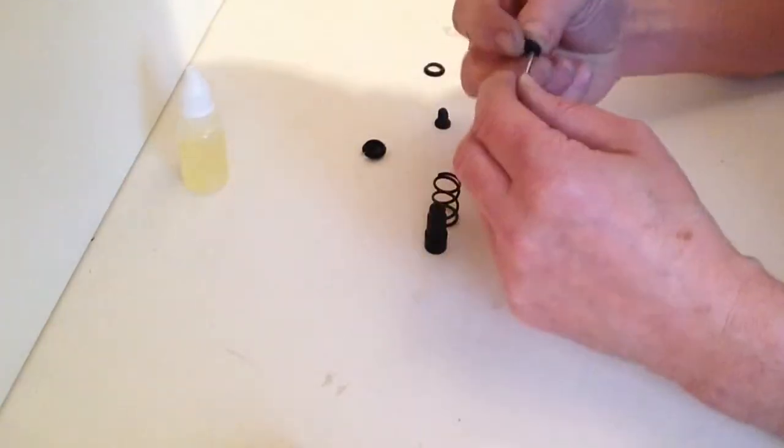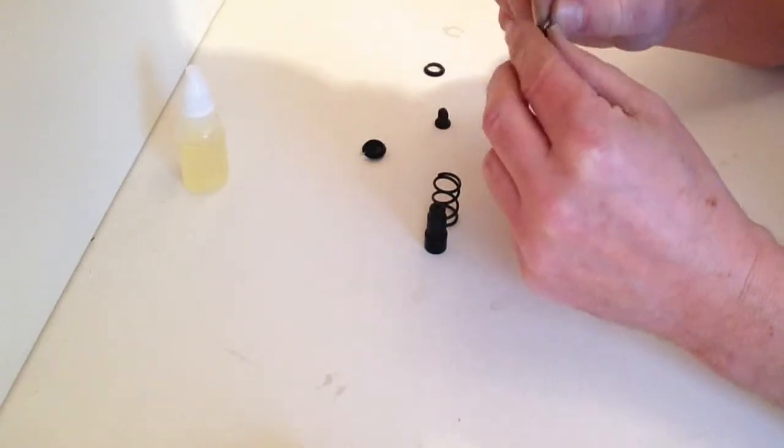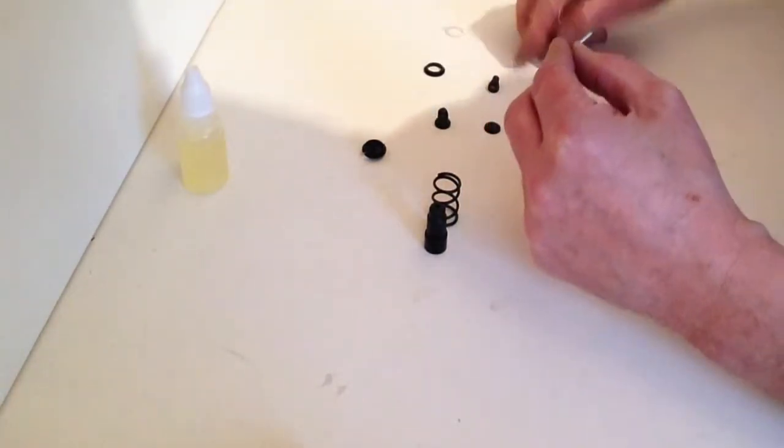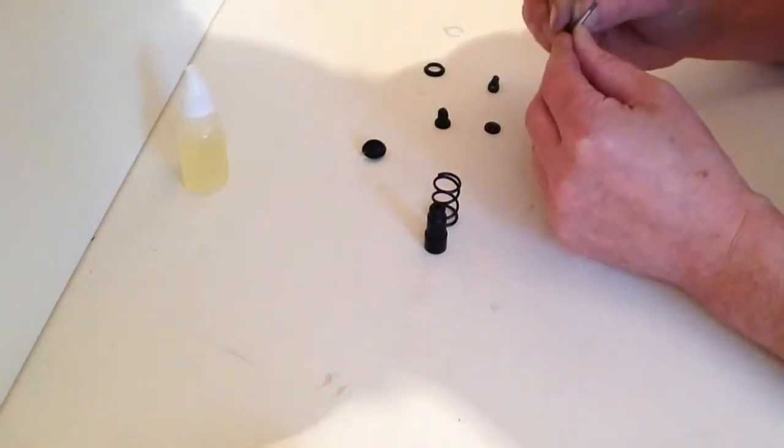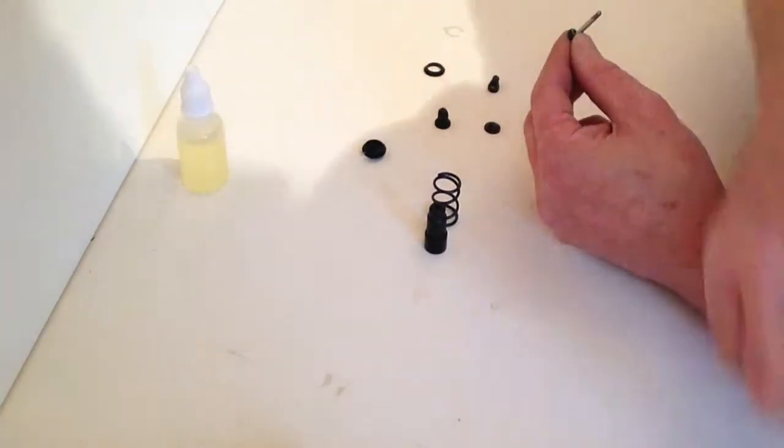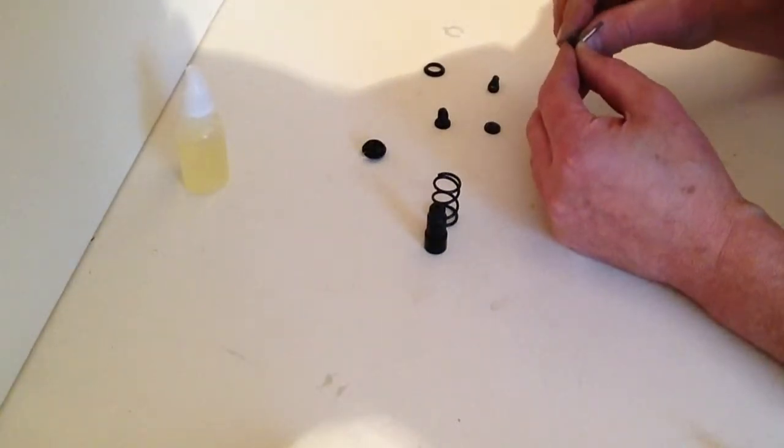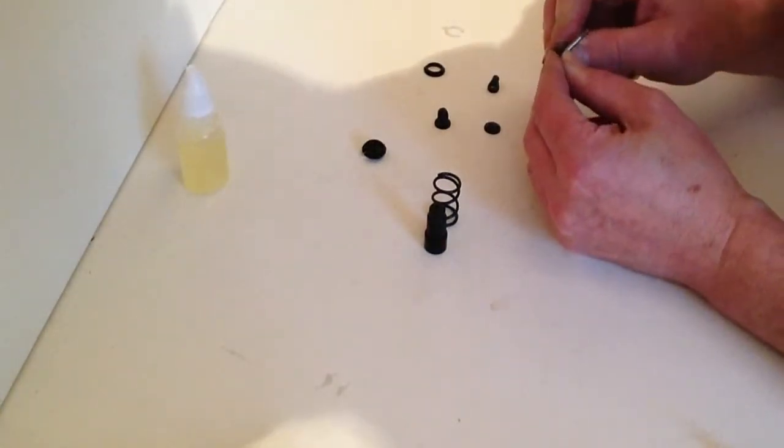Once you have done that, take your piston, place your piston over the top, and then take your other C-clip and once again fit that into position.